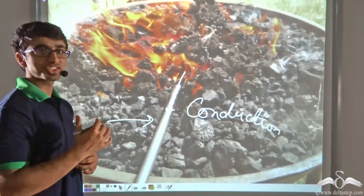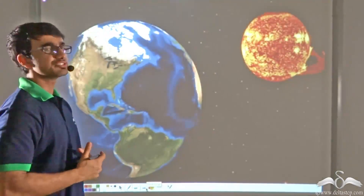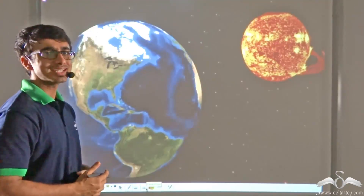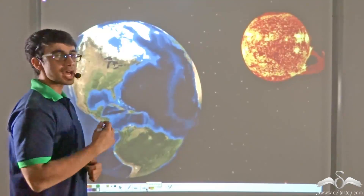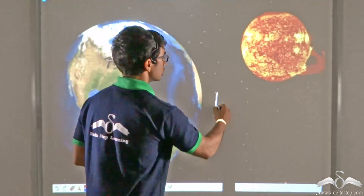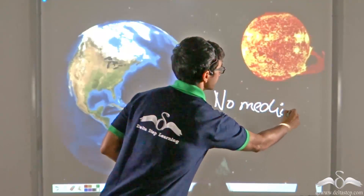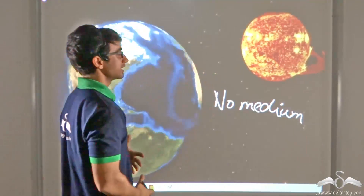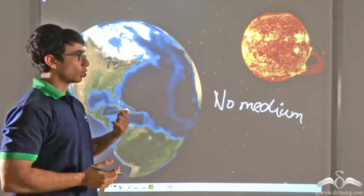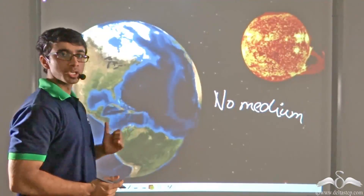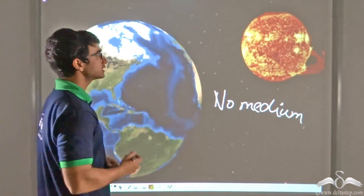Now I have a question for you. The earth is very far away from the sun — that is lakhs and lakhs of kilometers far away — and obviously in outer space there is no medium. Let alone being a solid medium, there is no medium at all. It is complete vacuum. So there is no medium and obviously there is no solid medium. So how do you think that the heat from the sun is reaching the earth?